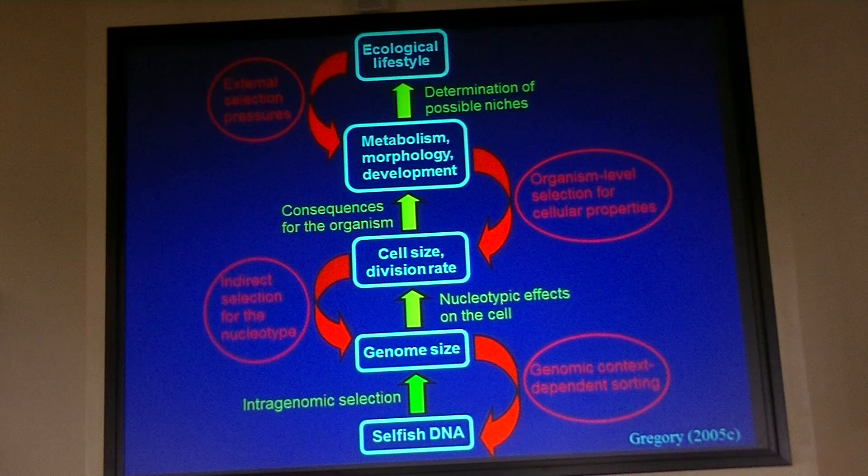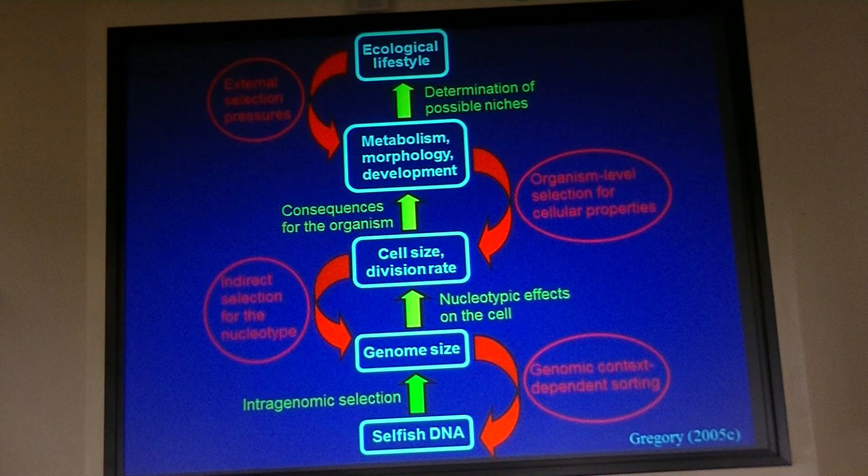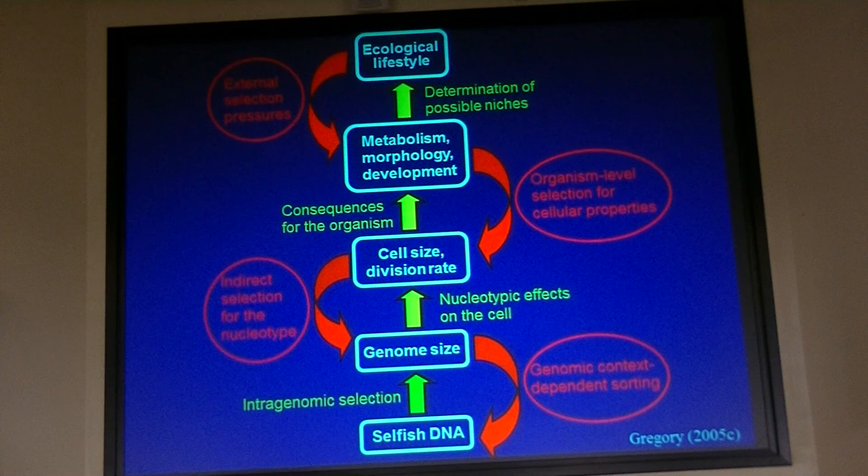But it's also a top-down relationship. Ecological lifestyles like becoming a strong flyer can impose pressures on physical features like metabolism and development, which affects cell size and division, which affects genome size, which affects how much non-coding DNA can accumulate. And sometimes you'll see changes such as loss of flight and increase in genome size, or loss of metamorphosis and increase in genome size as those constraints are released. So it's a complicated relationship involving multiple levels of selection — probably a better approach than just saying it's all due to one factor.